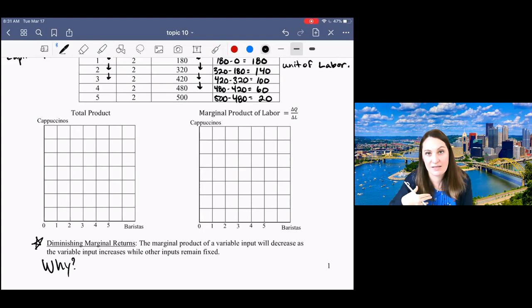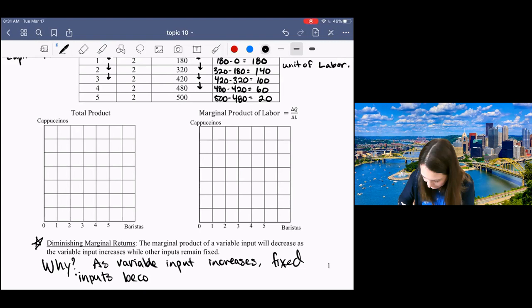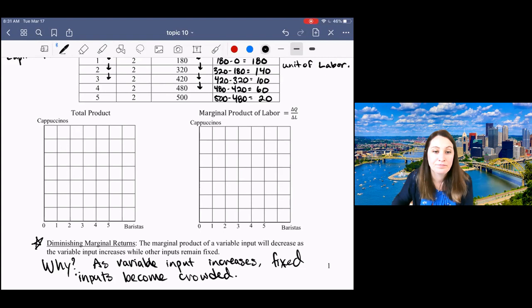Well, in the context of our coffee shop, this makes sense. If you only have two espresso machines, then eventually those espresso machines will get crowded as you hire more and more workers. This is true actually for any production process. As the variable input increases, fixed inputs become crowded. So we will always expect to see diminishing marginal returns whenever we have any type of production process.